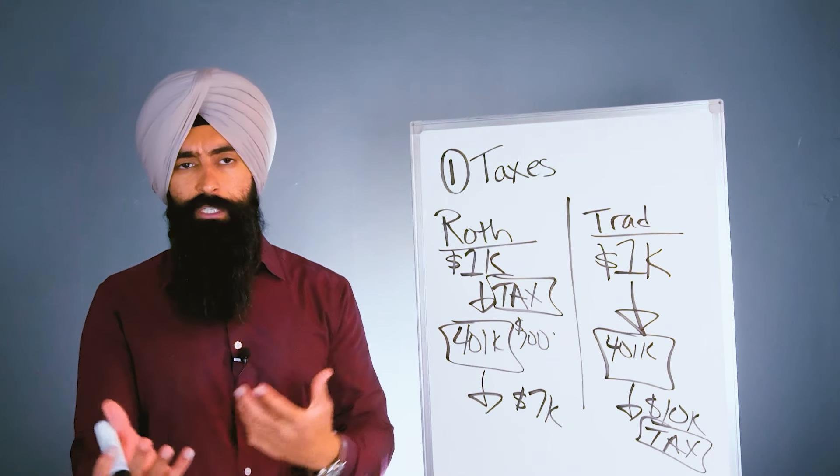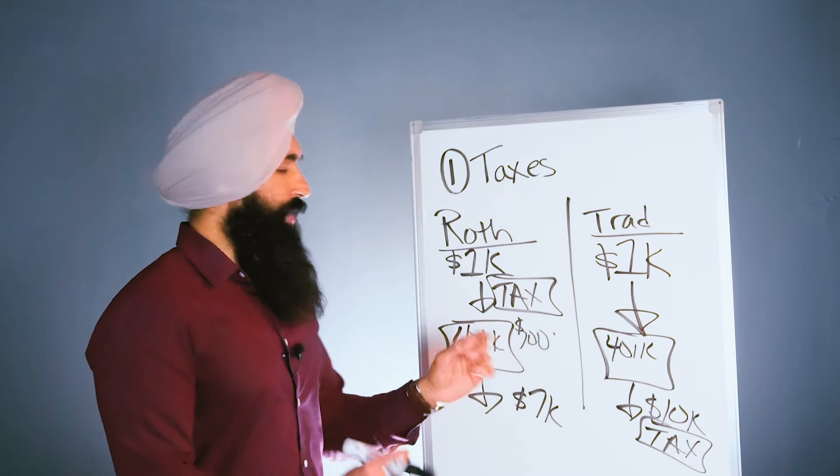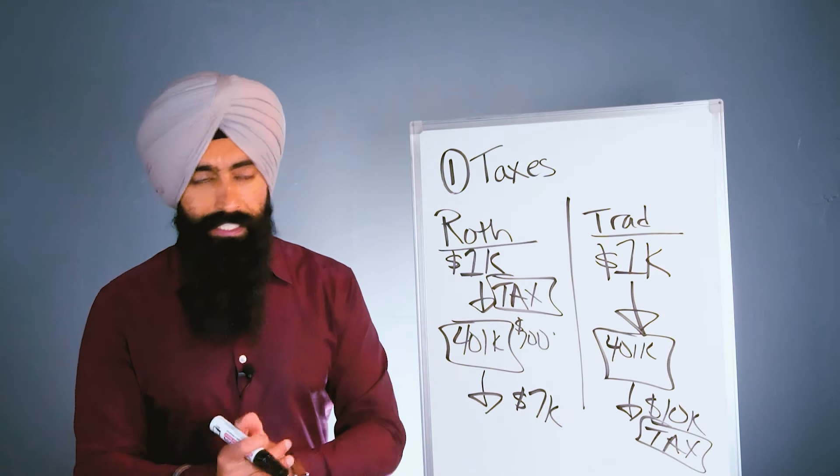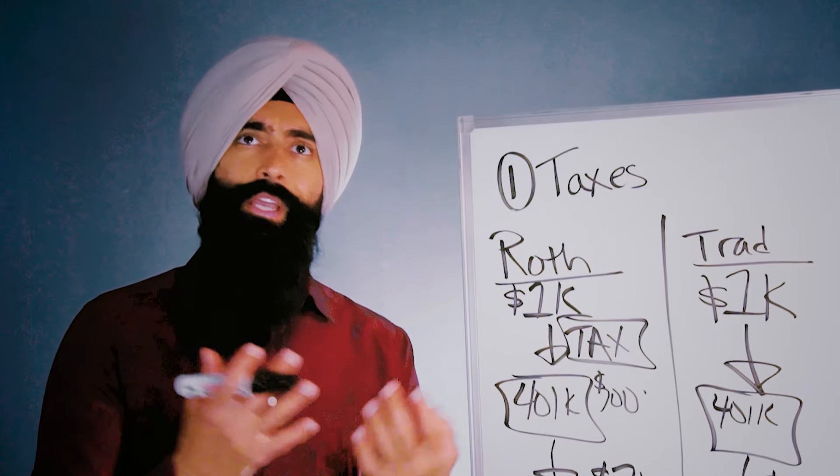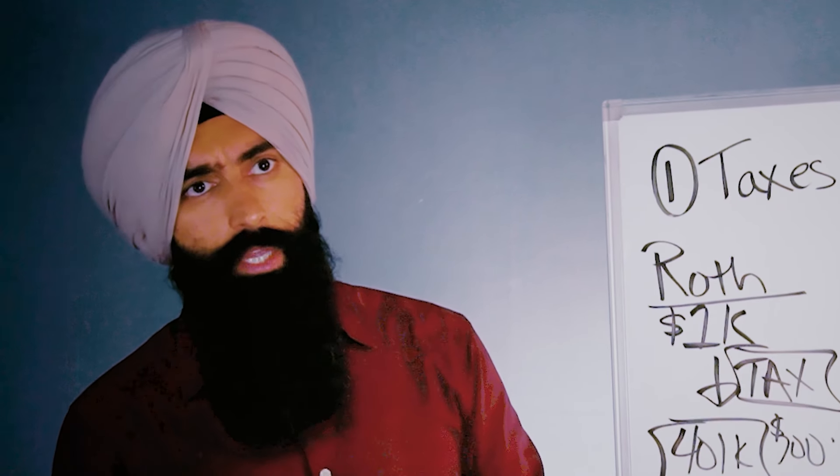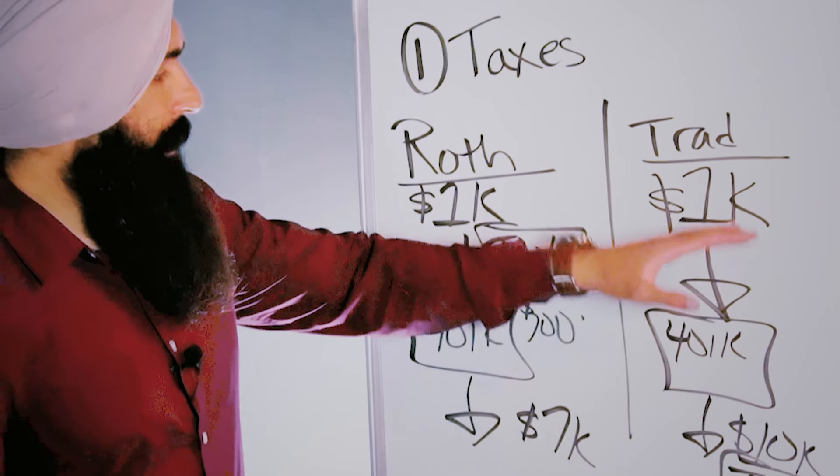When you're making the decision of which one's better for you, the main question most people ask is: when I retire, what's my income going to look like? I'm not going to have a job, so my income will be lower, so my tax bracket will be lower. Because of that, I should pay taxes when I pull my money out.